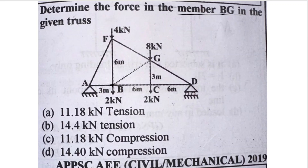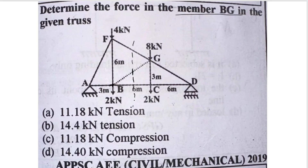If two joints are different here and each member does not pass through the same joint, then even though 4 members are cut, try to find a section where only 3 members are cut. If three members are cut and each member passes through a different joint — not all three through one joint — then this section is correct. We put this section.